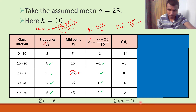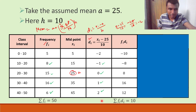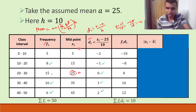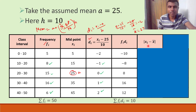Sigma fi * di is done. Now next, what we have to find is mod(xi - x̄), that is the absolute deviation. From the previous slide, x̄ is 27.